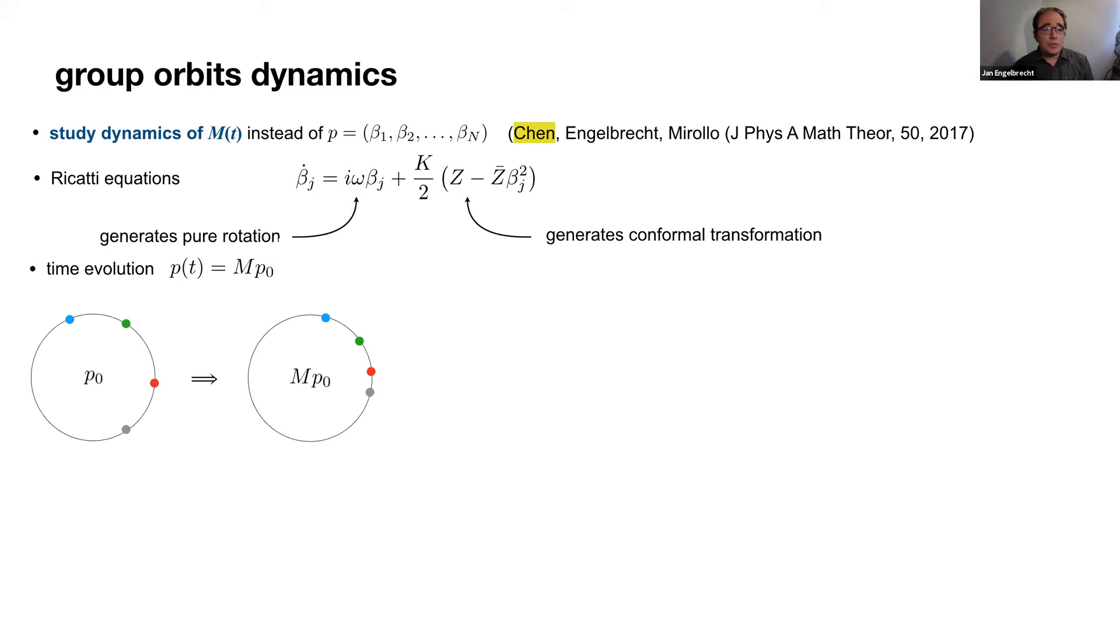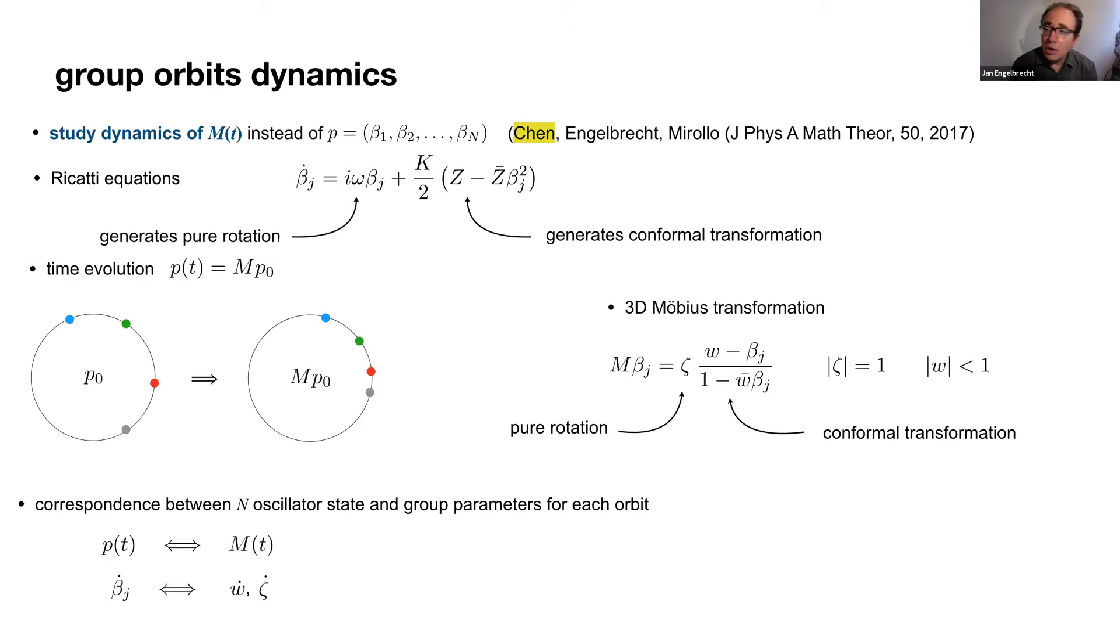So generically, a finite n oscillator state, in this case four dots on a circle, moves forward in time by a single group transformation which is comprised of two parts. The first part is the pure rotation, and the second part is this conformal transformation. The group element M is parameterized by the variable zeta, an angle on the unit circle, and this parameter w, which itself lives in a disc. So that gives us the three dimensions. In a series of papers, we've looked at the correspondence between the oscillator dynamics and the dynamics of the group variables.